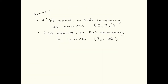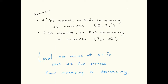Let's summarize. The first derivative is positive — the original function is increasing from zero to one-half. The first derivative is negative — the original function is decreasing from one-half to infinity. Therefore, there's a local max at x equals one-half, because the function changes from increasing to decreasing there. It is possible that in other problems you could have multiple maxes and mins if there are multiple places where the function changes from increasing to decreasing or vice versa. You'll have to analyze each problem separately.